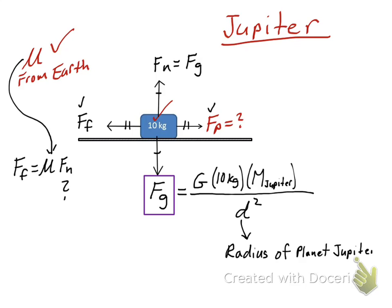The mass of Jupiter, we can look up in our textbook or Google it. The radius of the planet Jupiter, we can look up that and Google it. So we can plug and chug. Make sure your units are correct.